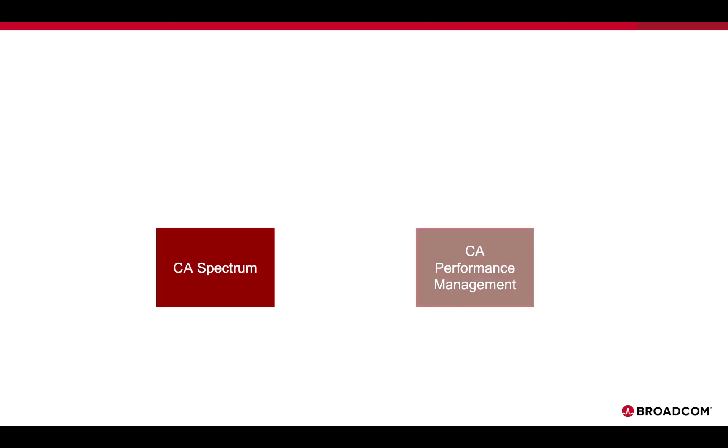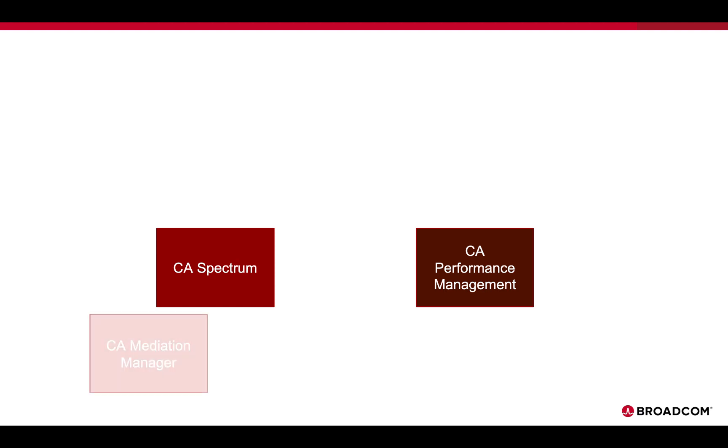Over 25 years ago, CA pioneered the network management industry with best-of-breed network monitoring solutions in fault and performance management of traditional networks. You know them as CA Spectrum, the first in delivering alarm correlation and isolation, and CA Performance Management, which evolved from CA eHealth, the most scalable big data solution in the market.